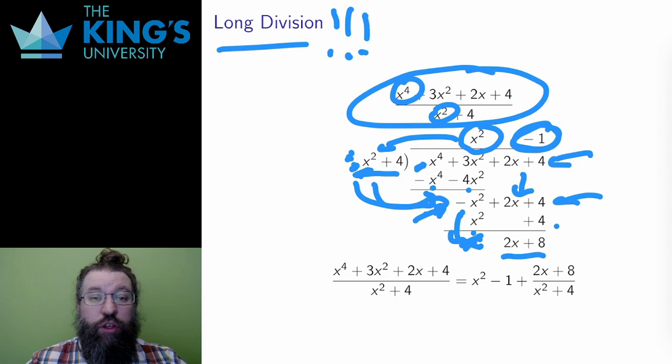Now I have something with degree less than x squared plus 4. And this means I must stop. This is the remainder. I've completed the long division. The quotient is x squared minus 2, and the remainder is 2x plus 8.